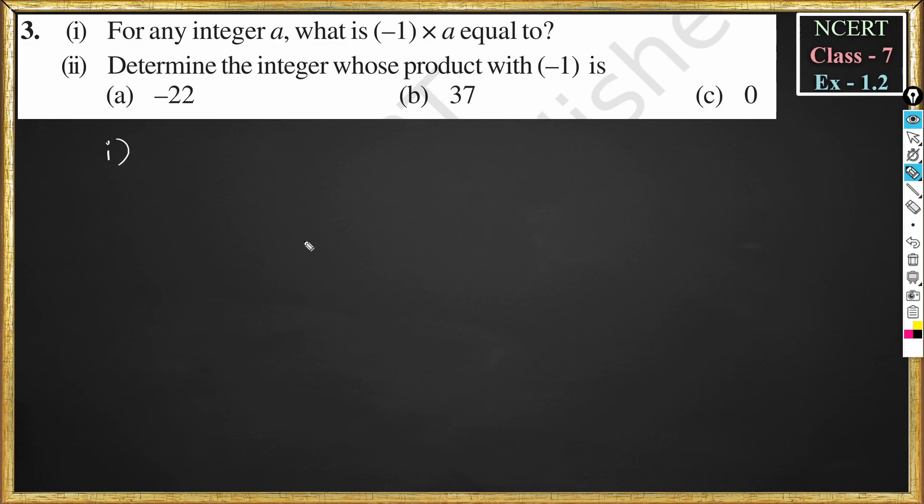In the introduction to exercise 1.2 video, we have learned that any integer a, if it is multiplied by minus one, then the integer becomes additive inverse. That means the sign of a changes.